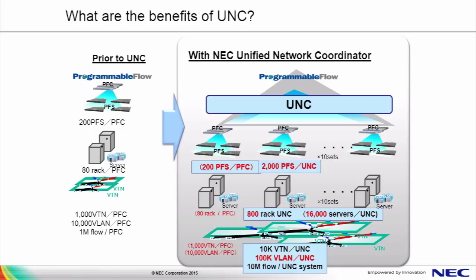In this diagram, to the left, we see that prior to UNC, a single programmable flow controller could manage 200 programmable flow switches, 80 physical racks of servers or virtual machines, 1,000 virtual tenant networks, or 10,000 VLANs, and 1 million flows. Now, with the introduction of the UNC, we can manage ten separate deployments of programmable flow controllers. This gives us ten times the scalability previously seen in SDN. With that, let's move on to the demo so we can see the Unified Network Coordinator in action.